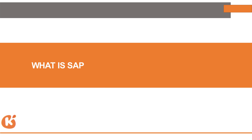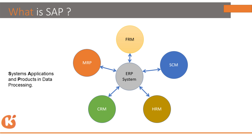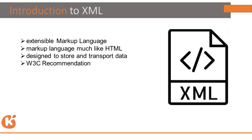CPI is a part of SAP. In SAP we have different modules, and CPI is part of the integration module. CPI is a middleware — it connects the back-end system to the front-end system, acting like a bridge. In CPI, we primarily understand XML language.